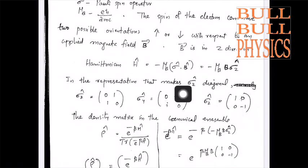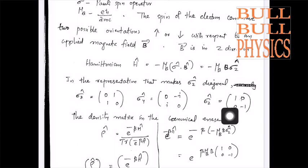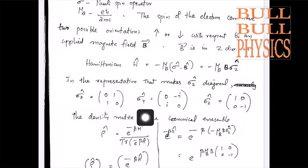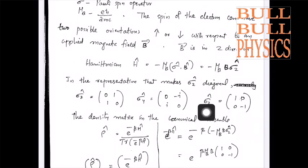In the representation that makes σ_z diagonal, we have σ_z = [[1, 0],[0, -1]], σ_x and σ_y have their standard forms. We choose such a representation so that σ_z is diagonal, and the matrix corresponding to σ_z is diagonal in that representation.